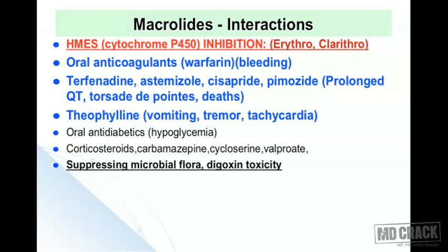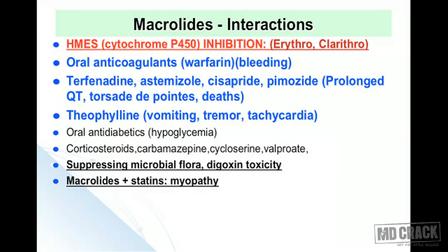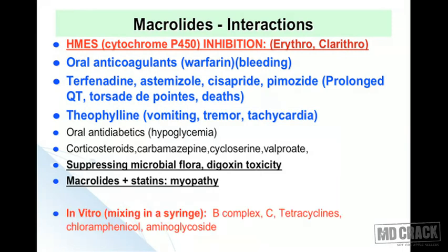Erythromycin and clarithromycin have a wide spectrum and can suppress microbial flora, which may lead to digoxin toxicity. Macrolides used along with statins can lead to myopathies. Mixing erythromycin or clarithromycin in a syringe with other drugs can cause in vitro pharmaceutical interactions — incompatible substances include vitamin B complex, vitamin C, tetracyclines, chloramphenicol, and aminoglycosides.